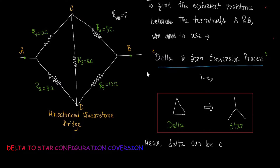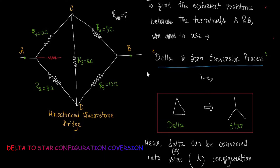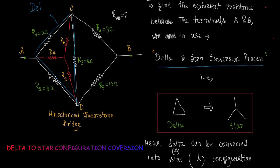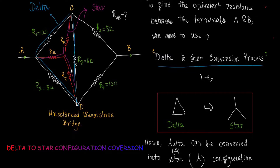The delta configuration containing the resistances R1, R3 and R2 can be converted into star configuration containing Ra, Rb and Rc. These are the resistances which will replace R1, R2 and R3 between the points A, C, D. Ra, Rb and Rc will be connected in star shape between the terminals A, C, D in place of R1, R2 and R3, which were connected in delta shape.